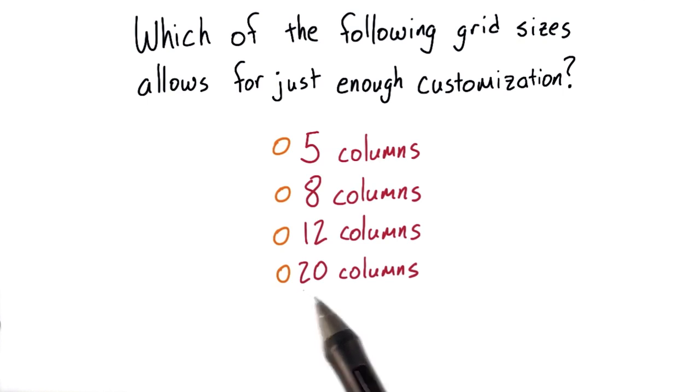But let's think about 20. With 20 columns, 3 doesn't divide into 20 evenly. So we know that we can't do 3 even columns on the screen.